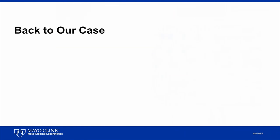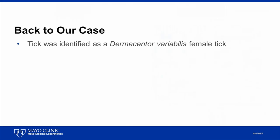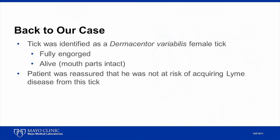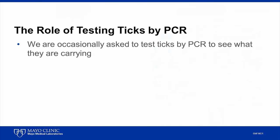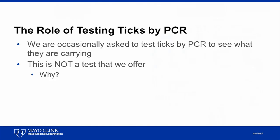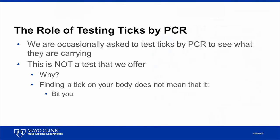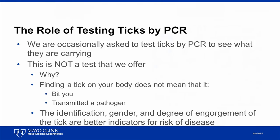Going back to our case, the patient's tick was identified as a Dermacentor variabilis female tick. It was fully engorged and its mouth parts were intact. Given this identification, the patient was reassured that he was not at risk of acquiring Lyme disease from this tick and that no prophylactic antibiotics were indicated. He was, however, advised to watch for signs of tick-borne illness and see a physician if they appeared. One request we occasionally receive is to test ticks by PCR to see what they are carrying. However, this is not a test we offer through Mayo Medical Laboratories, because finding a tick on your body does not mean it bit you or transmitted a pathogen. Instead, the identification, gender, and degree of engorgement of the tick are better indicators of risk of disease — and those are all aspects of the identification we provide.